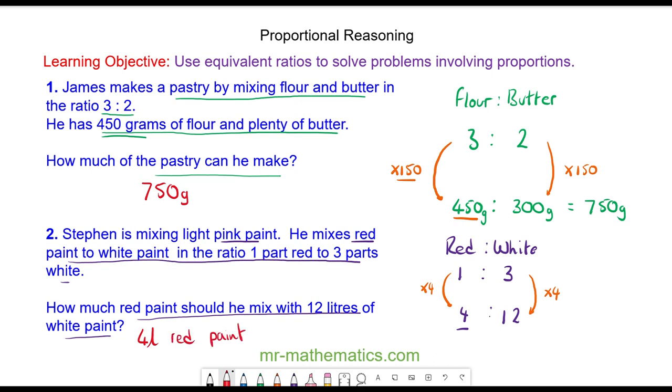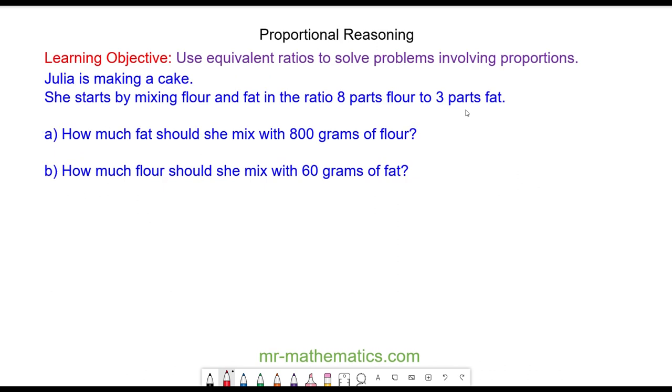Okay let's try one more question. In this question Julia is making a cake. She starts by mixing flour and fat in the ratio of 8 parts flour to 3 parts fat. How much fat should she mix with 800 grams of flour? And how much flour should she mix with 60 grams of fat?